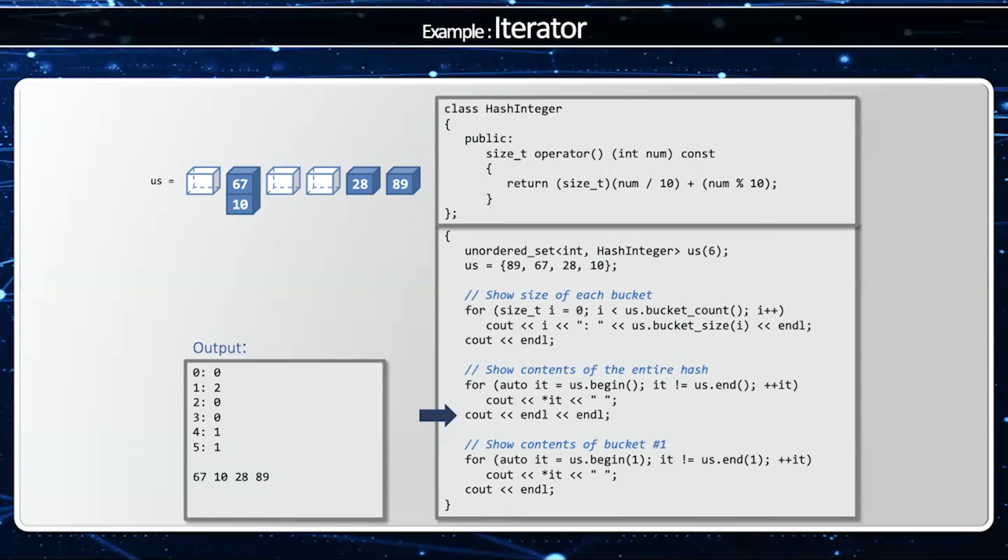Then go to the next one which is 89. So 67, 10, 28, 89. But now if I go use a local iterator for just bucket 1 that's only going to give me 67 and 10.